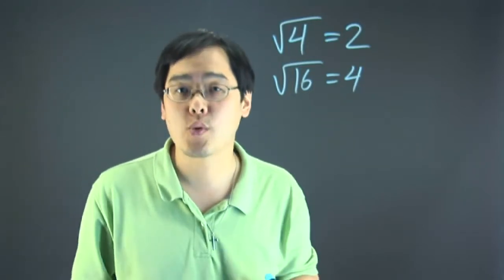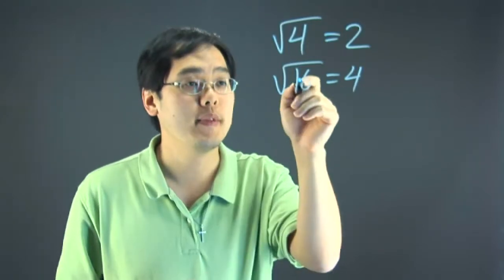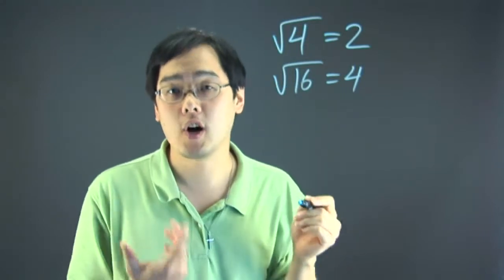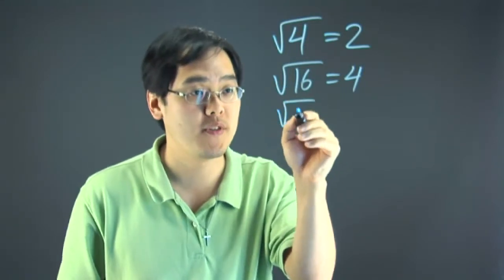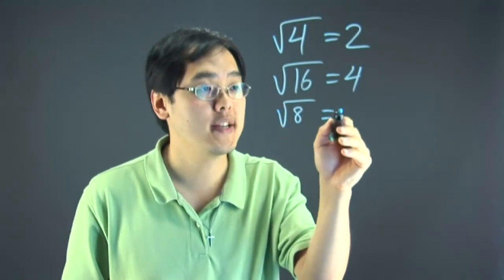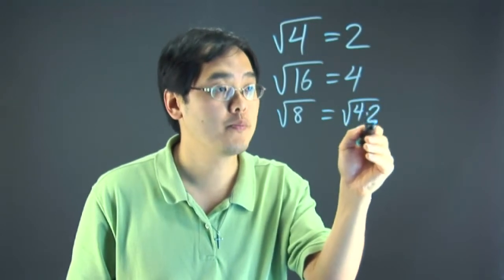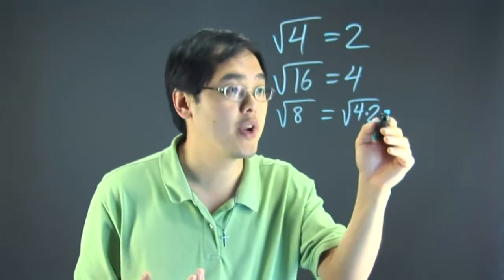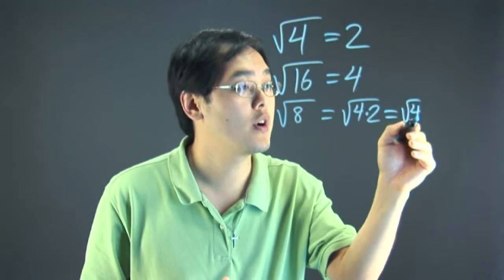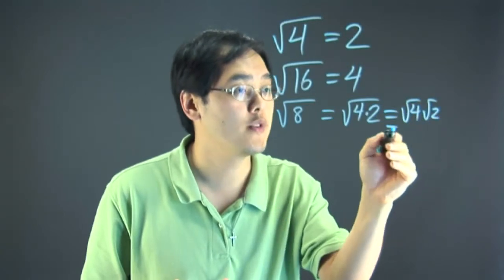If there's not perfect squares, you want to simplify and find any factors that are perfect squares. For example, if you have square root of 8, square root of 8 is 4 times 2. There are rules that allow you to break it down: square root of 4 times square root of 2, and that will give you 2 root 2.